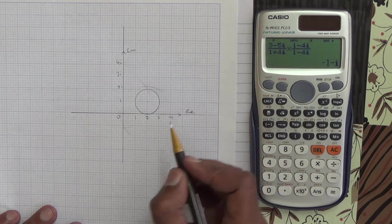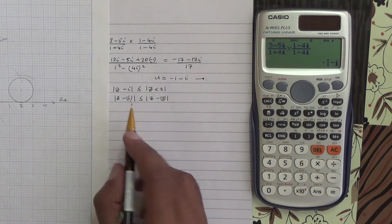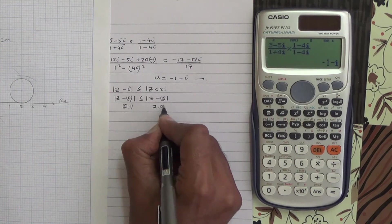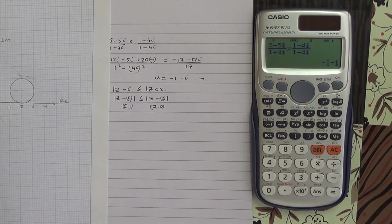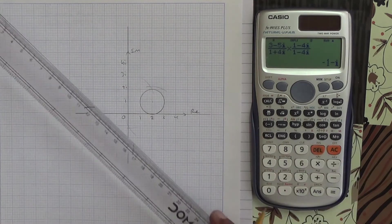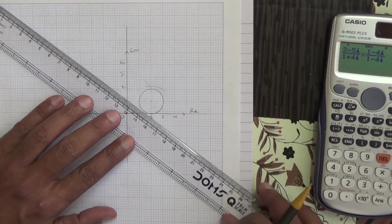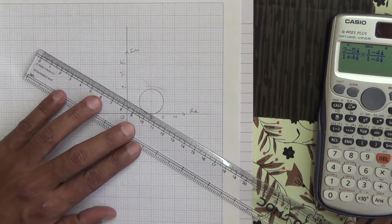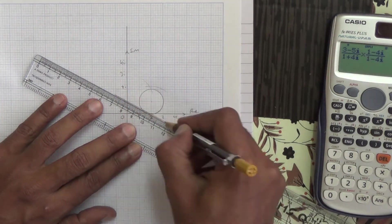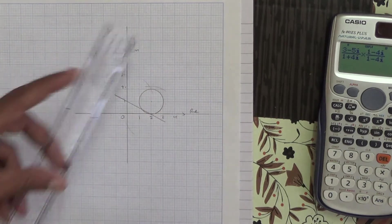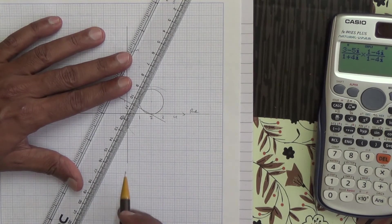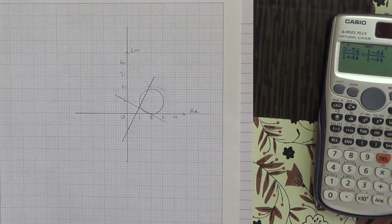Now from here, we need to draw the perpendicular bisector. This is the point (0, 1) and this is the point (2, 0). We just have to plot these two points, draw a line, and then bisect the line. I'm going to draw them — 1, 2. There we go. So this is your line, and now we need to bisect the line. I've already put the bisectors and done the construction here. We bisect the line and get a perpendicular bisector. So these should be the drawings.